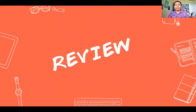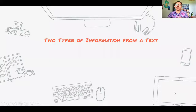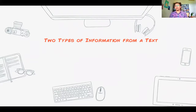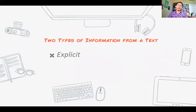First of all, what is really important is that we can get different types of information from a text, whether it be fiction or nonfiction. There are two types: the first one is the explicit information, and the second one is the implicit information.